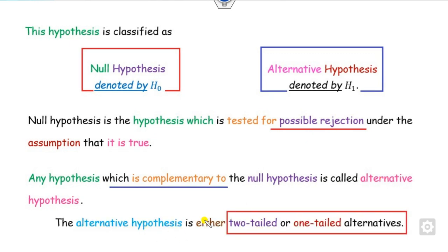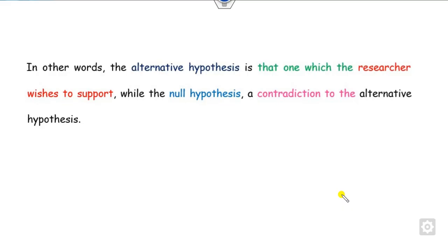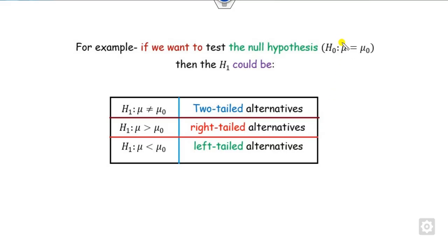The alternative hypothesis may be of the two-tail or the one-tail type — we will see in a couple of examples. In other words, the alternative hypothesis means what the researcher wishes to support, while the null hypothesis is the contradiction to the alternative hypothesis. Once you write H0 as mu equals mu-naught, the opposite can be not equal to, greater than, or less than. If it is not equal to, we call it two-tail; greater than is the right tail, and less than is the left tail.